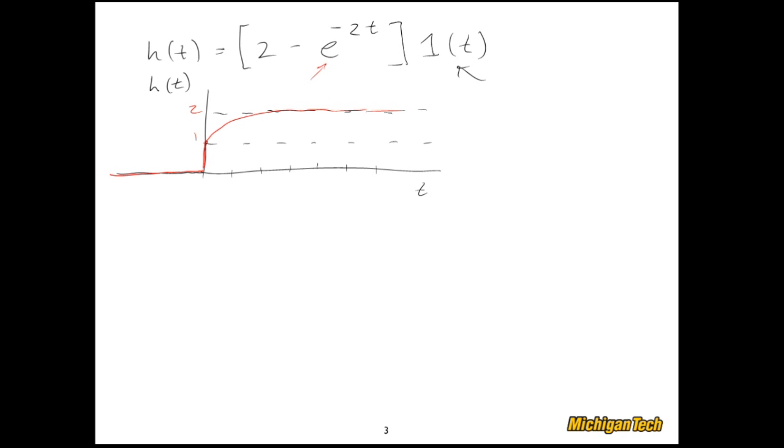Okay. That's strictly just to get a little bit of a sense of the function that we're working with. Now let's go ahead and take the Laplace transform of it. One way to look at this is that h of t is 2 times that unit step minus e to the negative 2t, again, times that unit step. And those two quantities, this function and this function, were in the Laplace transform table.